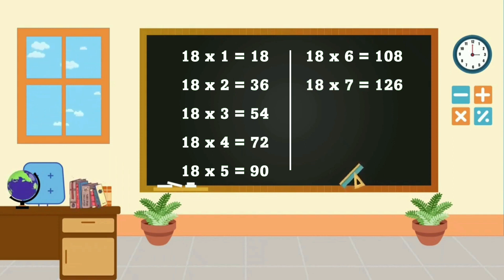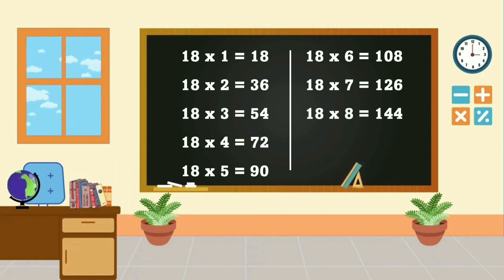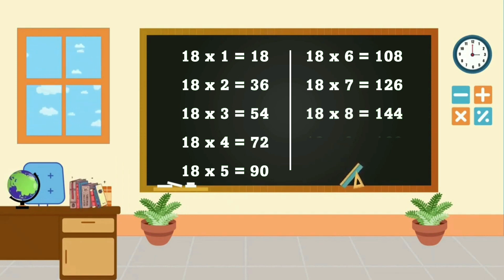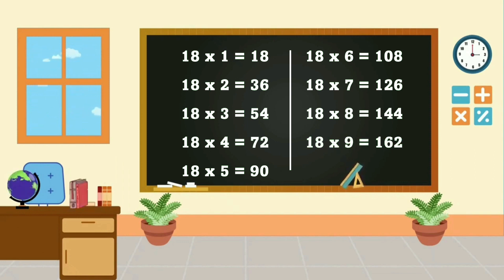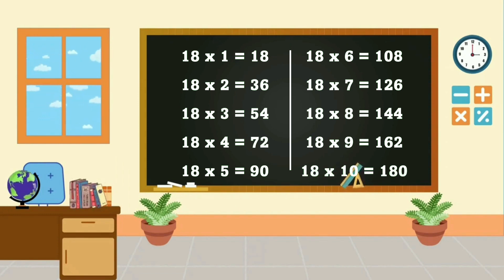18, 7's are 126. 18, 8's are 144. 18, 9's are 162. 18, 10's are 180.